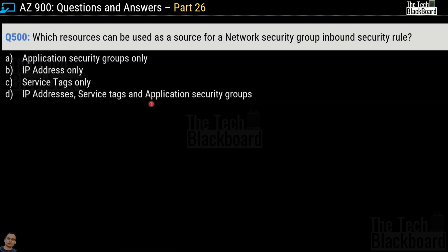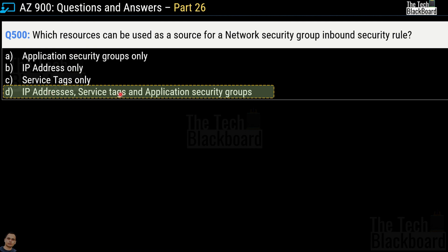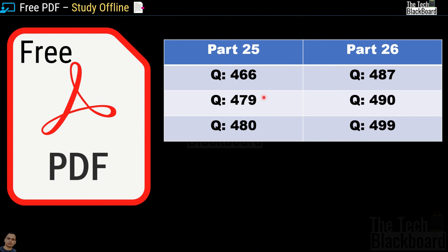And here comes question number 500 — all you Azure cloud learners deserve a round of applause! Which resources can be used as a source for a network security group inbound security rule? Options are application security group only, IP address only, service tags only, or IP addresses, service tags and application security groups. The correct answer is option D: IP addresses, service tags and application security groups. We have now reached the milestone of question number 500.